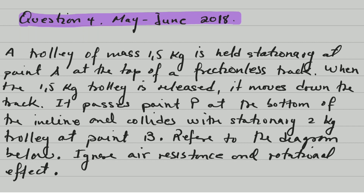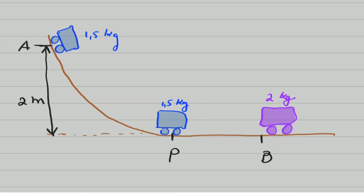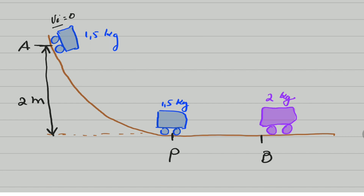A trolley of mass 1.5 kilograms is held stationary at point A at the top of a frictionless track. When released, it moves down the track, passes point B at the bottom of the incline, and collides with a stationary 2-kilogram trolley at point B. Ignore air resistance and rotational effects. The initial velocity of the 1.5 kg trolley is zero because it is released from rest, and the 2 kg trolley is also stationary, so its initial velocity is also zero.